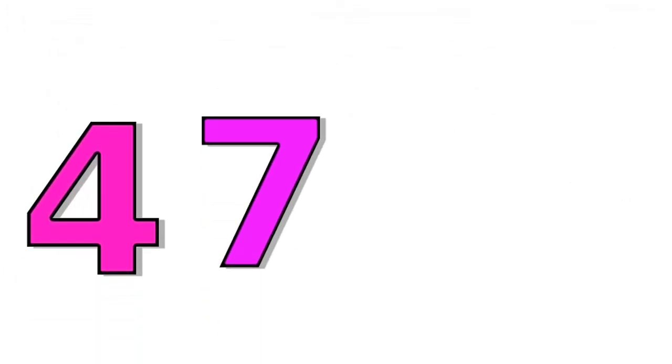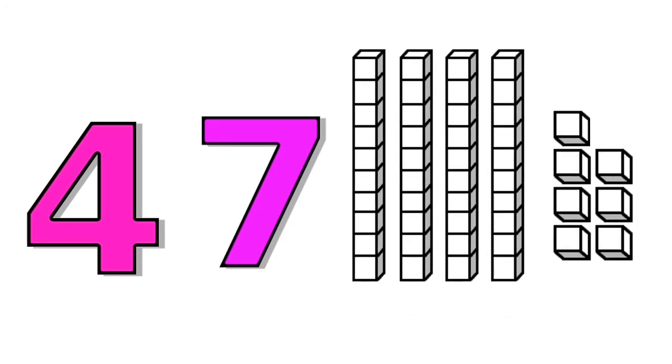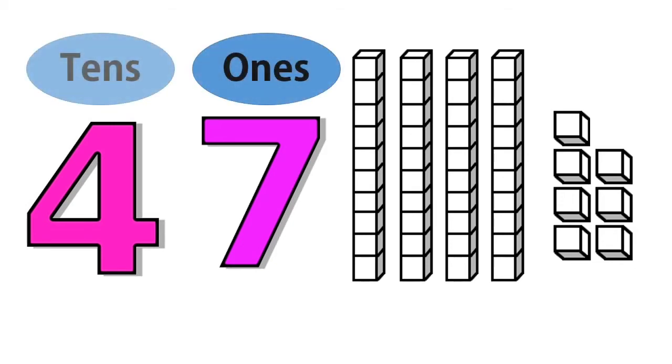Again, let us go back to the number forty-seven. As we said, this number is made of two digits and each digit has a value. The number at the right, the number seven is the ones and the number four is the tens.